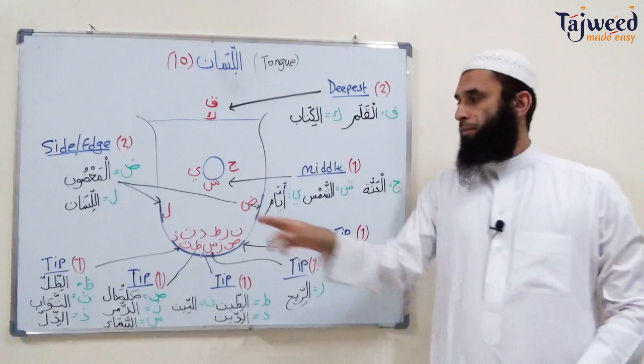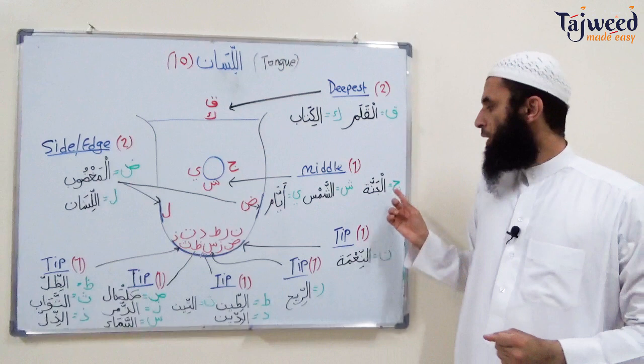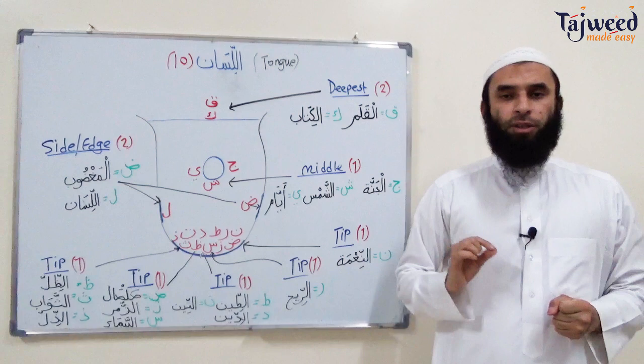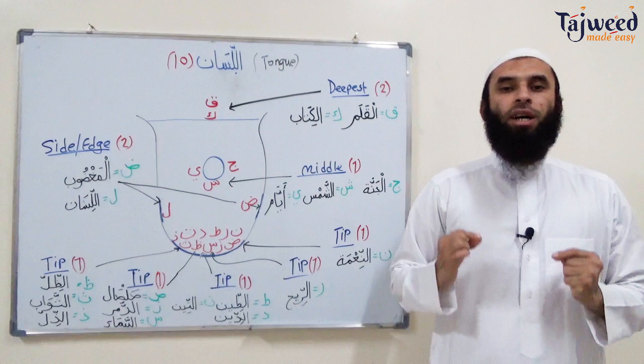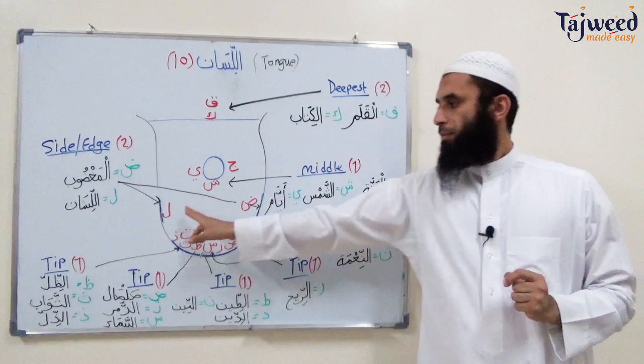Now the middle side of the tongue: three letters share one makhraj point — Jim, Sheen, and Ya. Jim is like the J in English, as in al-janna. We don't pronounce it like the French J — it's not al-janna with that soft sound; it should be a clear J. Sheen is sh, as in al-shams, and Ya as in ayyam. These three letters are pronounced right in the middle of the tongue.